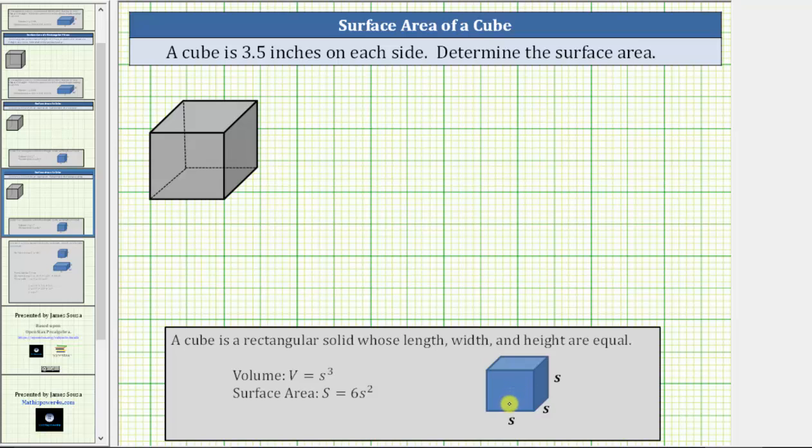The surface area is equal to the number of square units it takes to cover the outside of the cube. The surface area is given by the formula capital S equals six times the square of little s, where big S is the surface area, and little s is the length of each side.